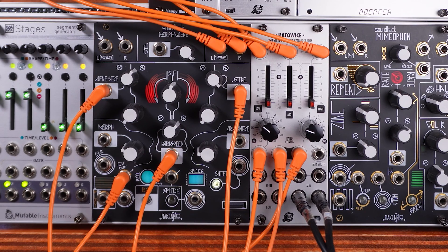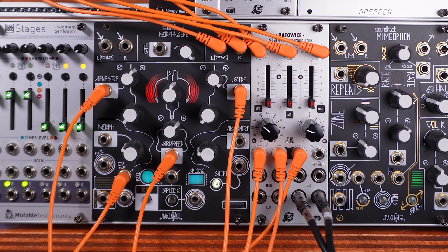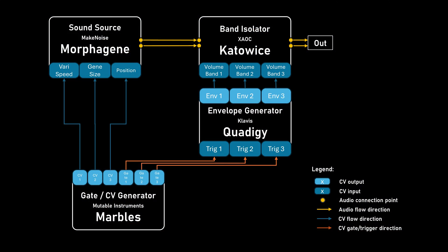You can also use the CV inputs for each band's loudness for more artistic purposes. In this example, the Morphogen is playing a sample of some wind chimes, and the Morphogen's grain size, slide, and vary speed is controlled by a Mutable Instruments Marbles. The Morphogen is also triggering three different gates that go into a Quaddigy to give me three different envelopes that then control the loudness of each band. The sounds of the Katowicz are also fed into a reverb, resulting in the sound that you hear now.